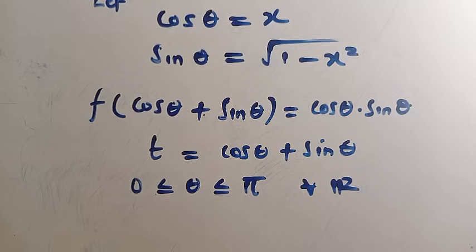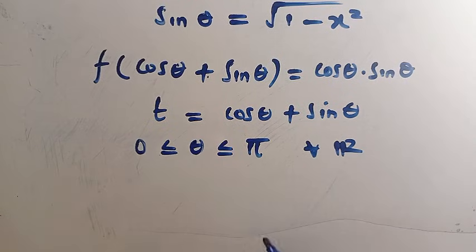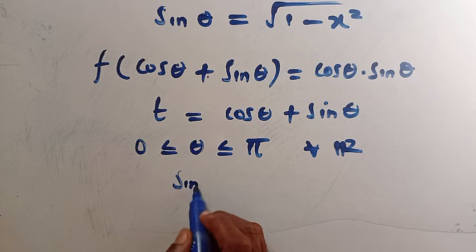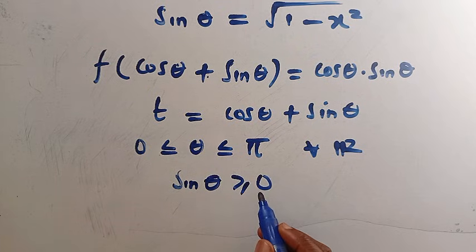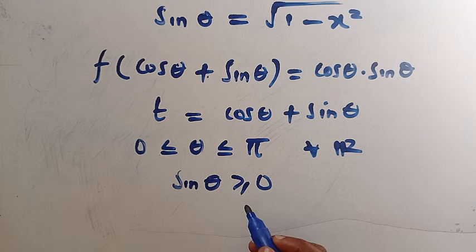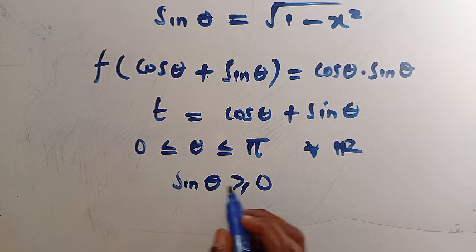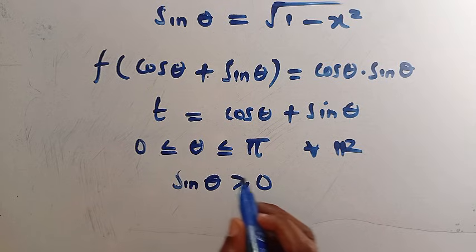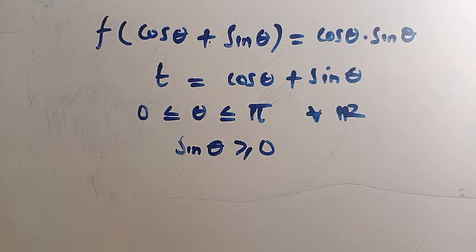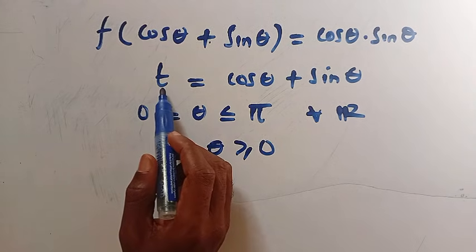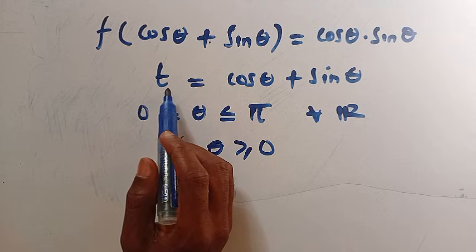By choosing the absolute value of sin θ, we consider whether it is positive or negative. We focus on the case where sin θ ≥ 0. For this case, √(1−x²) = sin θ. For the domain of t, since t = cos θ + sin θ, we need to understand what values t can take.